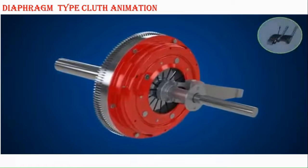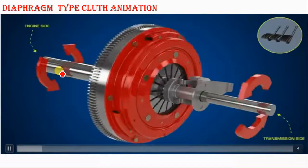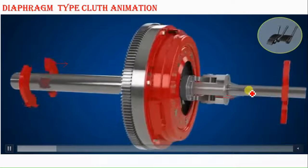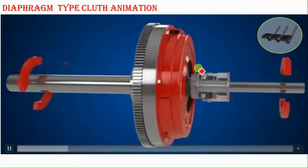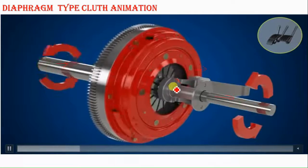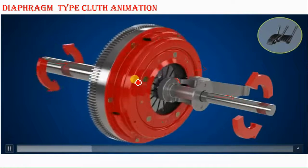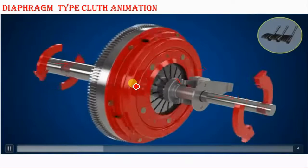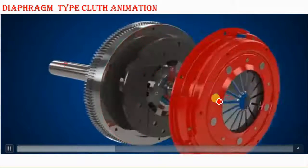Now let us see an animation of the diaphragm type clutch. This diaphragm type clutch has two shafts: one is called the main shaft, which is connected with the engine, and the other is the output shaft, which is connected with the gearbox. There is a throwout bearing that pushes the diaphragm finger, and this diaphragm finger presses the friction plate mounted between the flywheel and the diaphragm housing. When the pedal is not pressed, there is engagement of the power and power flows.